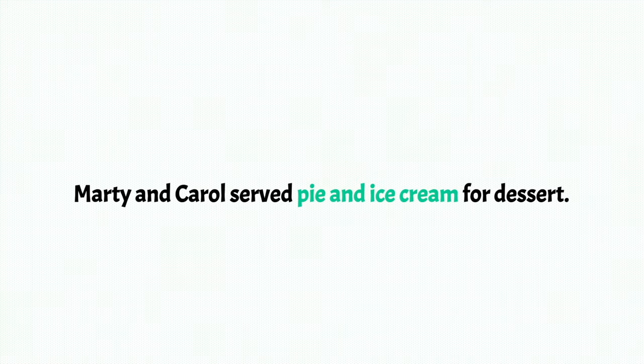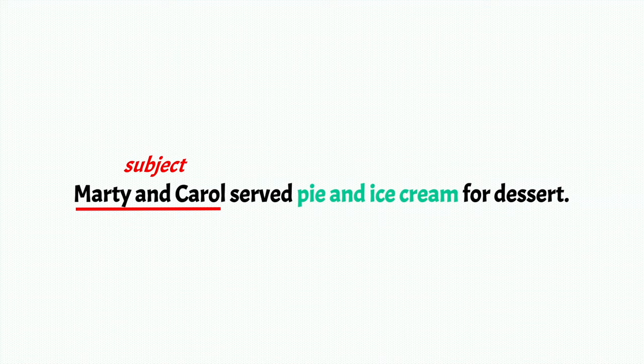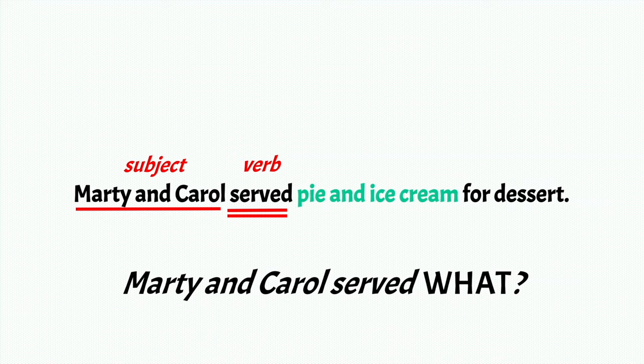Next example: Marty and Carol served pie and ice cream for dessert. So we have Marty and Carol as the subject — that means it is a compound subject because there are two people. Then we have a verb, served. So we can ask Marty and Carol served what? Pie and ice cream. Direct object.